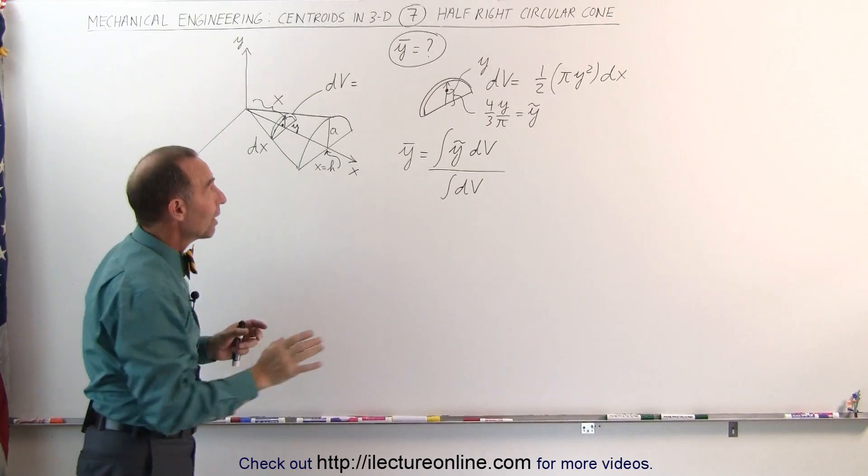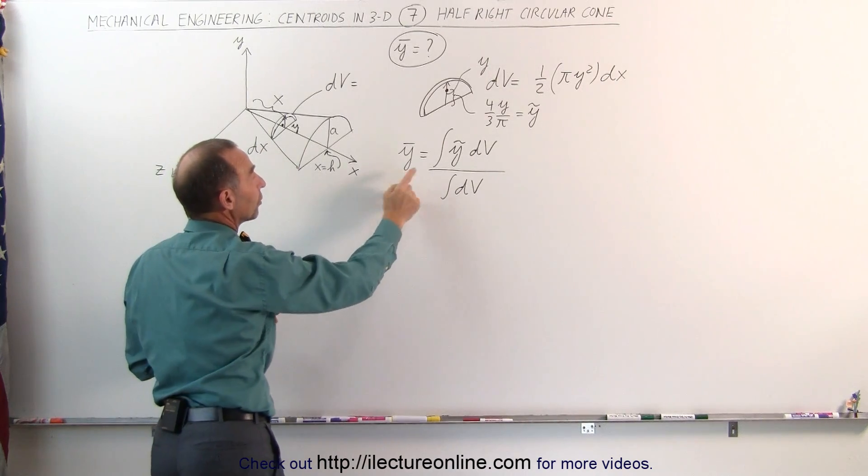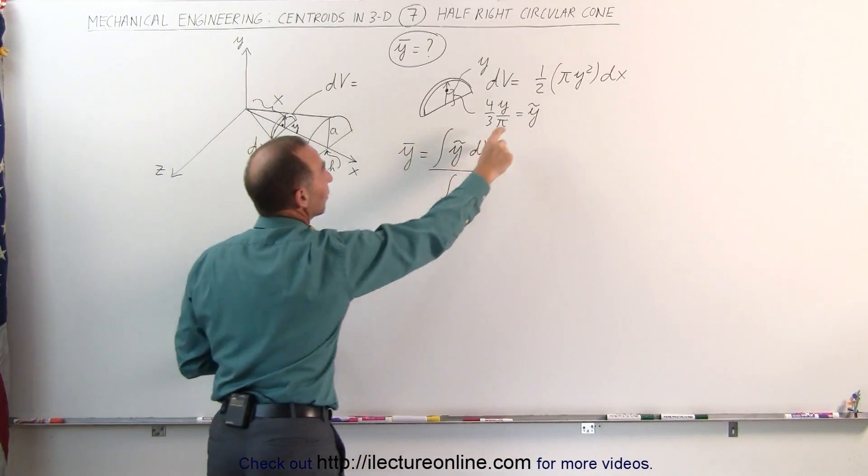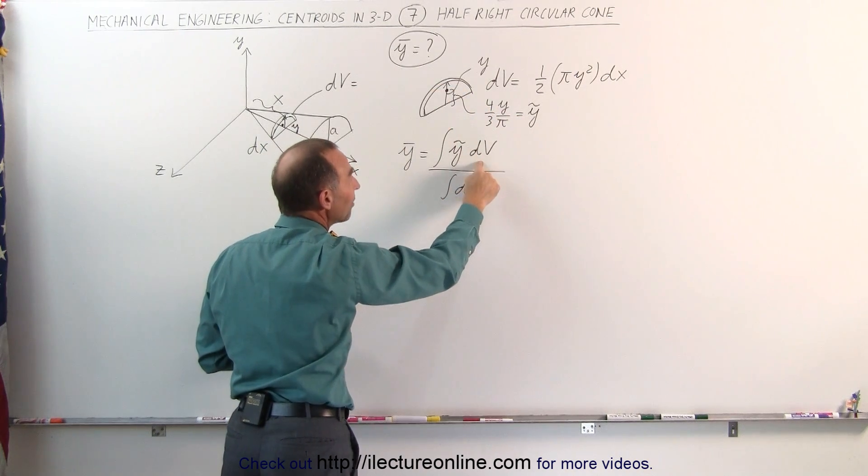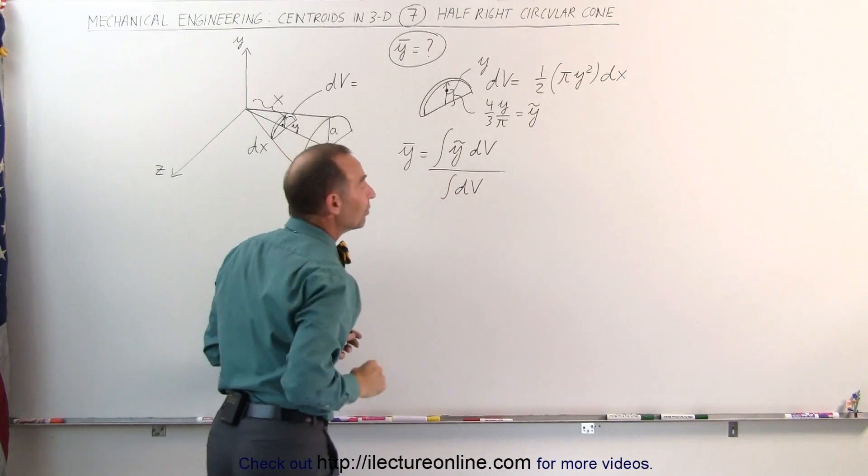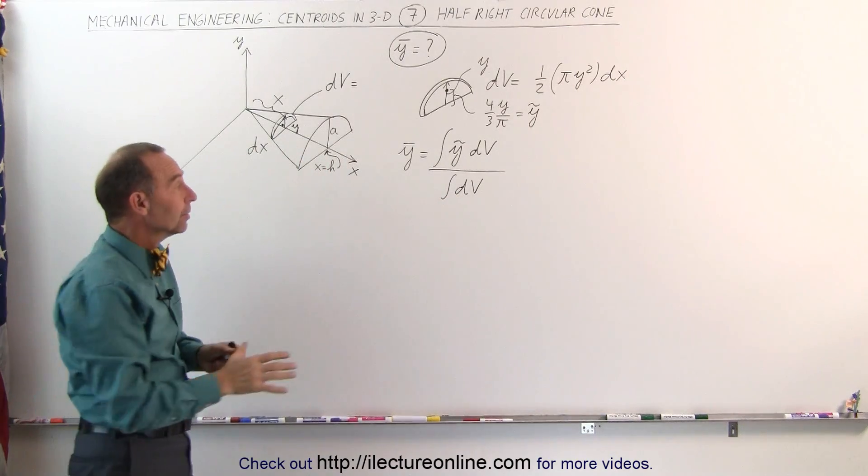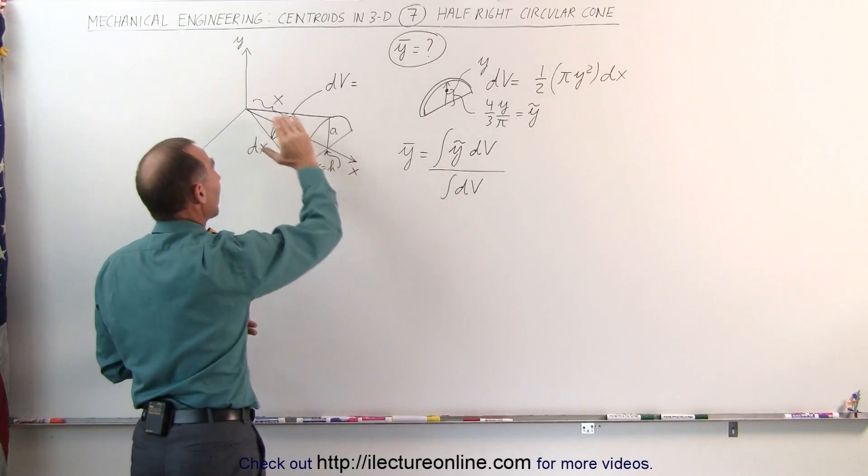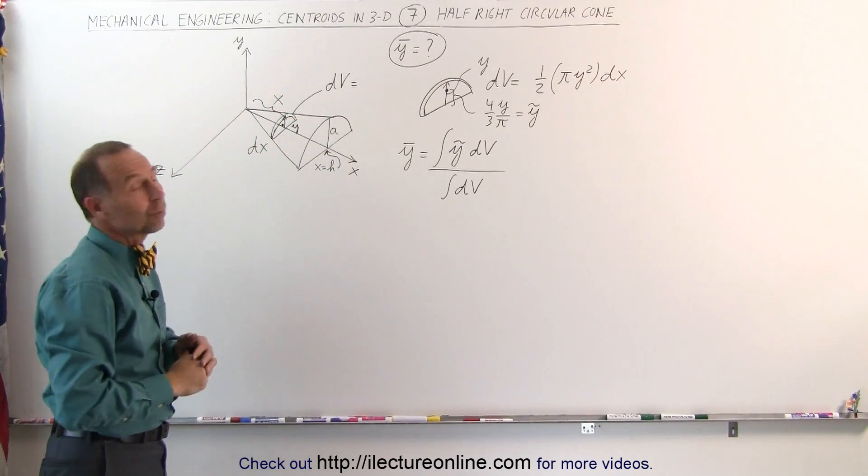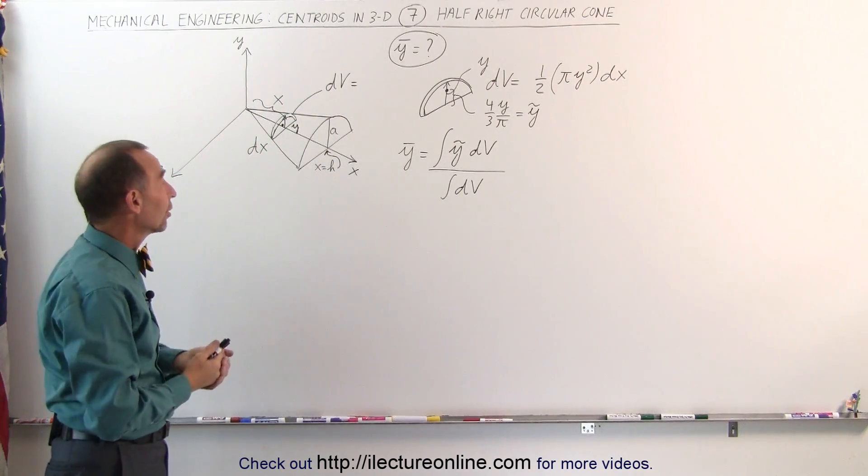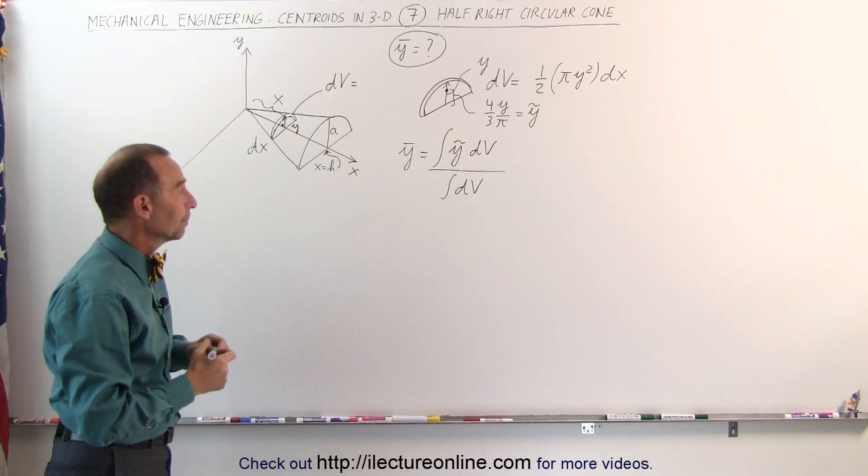Now when we write the equation to find the y coordinate the centroid, it's going to be equal to the integral of that centroid of that small little disc times dv divided by the integral of dv. The denominator, the integral of dv is still the same, it's still the volume of that half right circular cone which is equal to half the volume of a full cone.